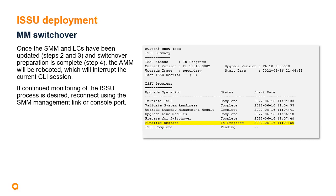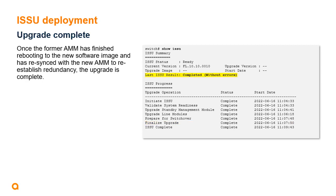Once the standby module and all line cards have been updated and switchover preparation is complete, the active management module will be rebooted, which will interrupt the current CLI management session. If you wish to continue monitoring the ISSU process, reconnect using the standby module's management network connection or console port. Once the former active module finishes rebooting and synchronization is reestablished with the new active module to reestablish redundancy, the upgrade is complete and you will see the status in the last ISSU results section of the show issu command output.